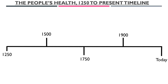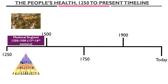The exam board can ask you questions that name the time period — for example medieval England — or give you the dates, for example 1250 to 1500, or just give you the centuries, the 13th to the 16th century. So it's really important that you know the names, the dates and the centuries of each time period. Our first time period, focused on in this video, is medieval England: 1250 to 1500, the 13th to the 16th century. It could also be known as the Middle Ages.